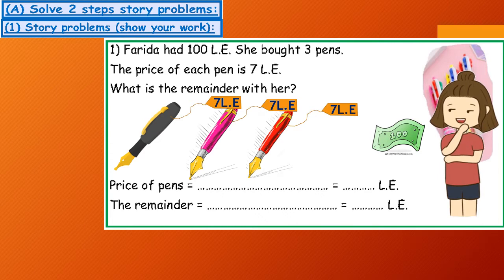First, the price of the 3 pens: 7 by 3 equals £21. So the remainder, the left money with her, £100 minus £21 for the pens.